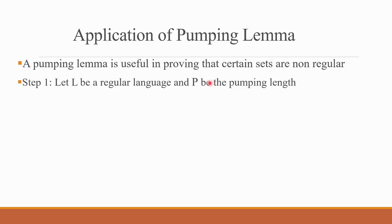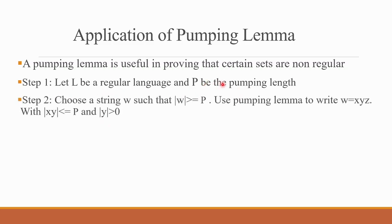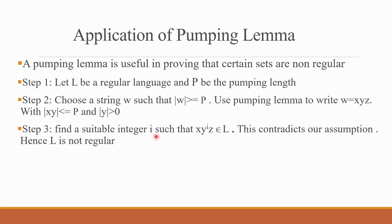The steps are: Step 1 — Let L be a regular language and p be the pumping length. Step 2 — Choose a string w such that |w| is greater than or equal to p. Then use the Pumping Lemma to write w = xyz with |xy| equal to p and |y| not equal to 0. Step 3 — Find a suitable integer i or k such that xy^i z is not an element of L. This contradicts our assumption, hence L is not regular.